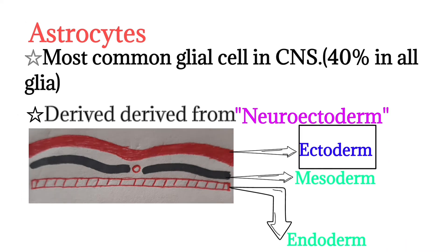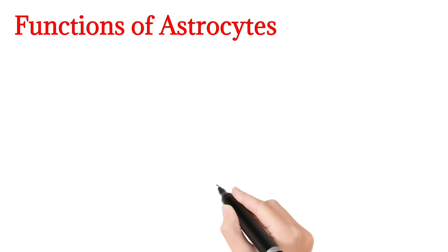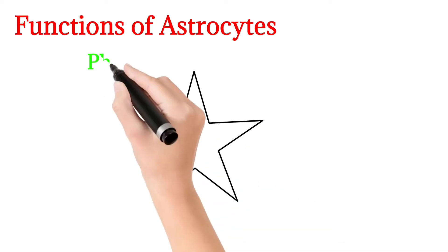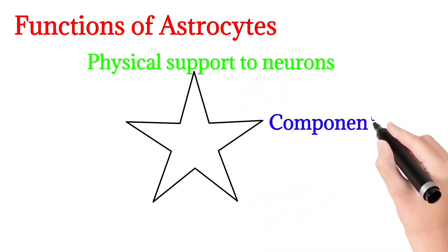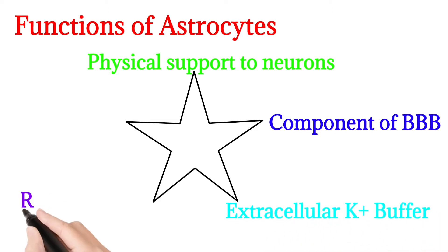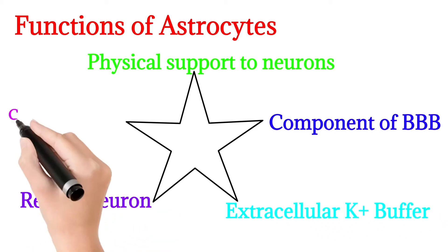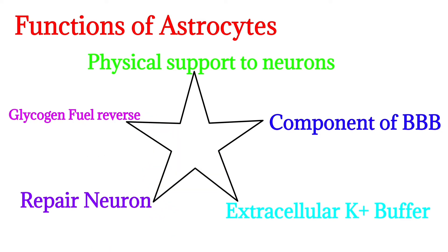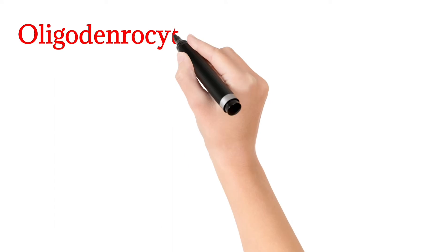The functions of astrocytes include physical support to neurons, forming a component of the blood-brain barrier, extracellular potassium buffering, repair of neurons, and glycogen fuel reserves.